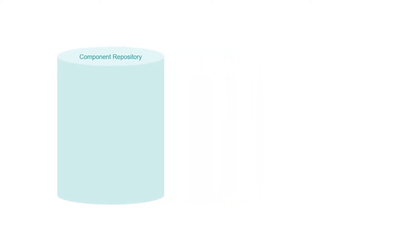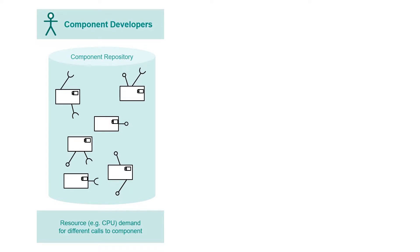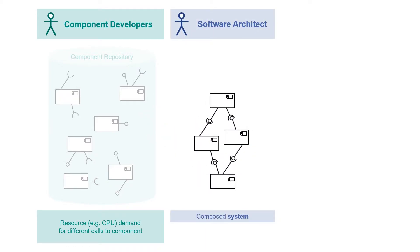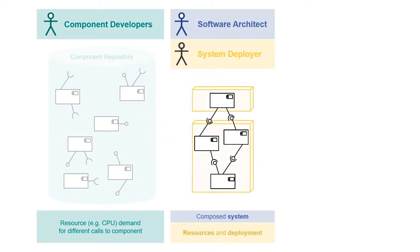In the component-based software development process, component developers first design and implement components and put descriptions of those components in a component repository. The model describes component interfaces, the behavior of the components, and the resources needed during the execution of different calls to the component. Then a software architect collects the components they need and composes them into a system.